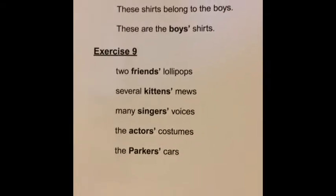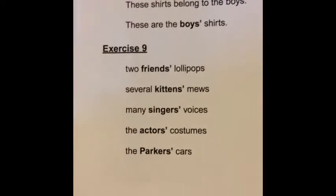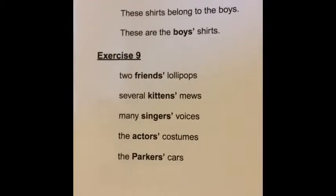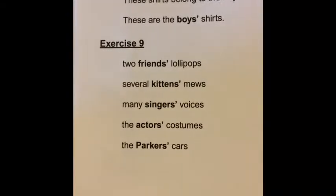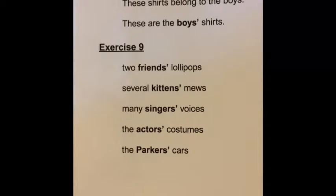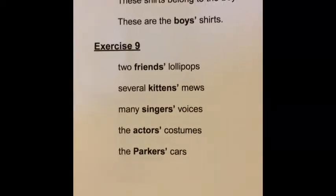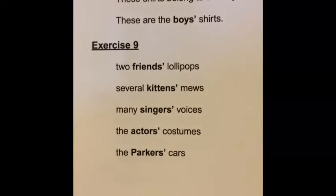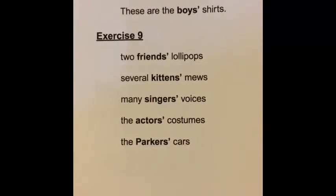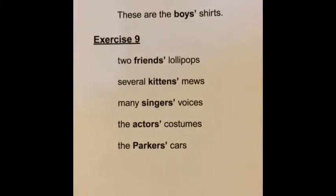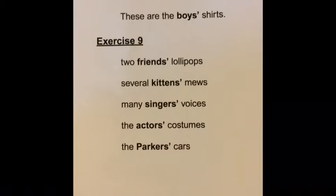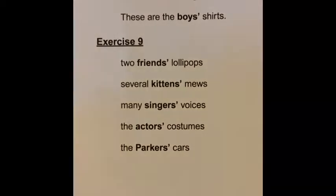Now you know an apostrophe s can turn a singular noun into an adjective, but what about when it's plural? We've been adding an s to words to make them plural — so how would you turn a plural noun into an adjective? Look: 'these shirts belong to the boys' becomes 'the boys' shirts.' Because it already ends with an s, you do not put an apostrophe s — that would be hard to say. All you do is add an apostrophe at the end. For example: 'two friends' lollipops,' 'several kittens' mews.' Read the rest and underline the adjectives that tell whose.